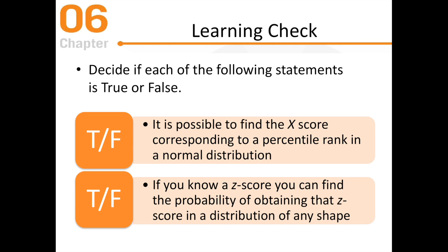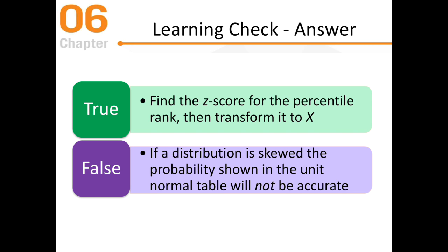True or false: It is possible to find the x-score corresponding to a percentile rank in a normal distribution. True — you can find the z-score for the percentile rank and then transform it back to a raw score. Second: if you know a z-score, you can find the probability of obtaining that z-score in a distribution of any shape. False — if the distribution is skewed, the probability shown in the unit normal table will not be accurate. You really can't use a z-score if the population distribution is skewed.